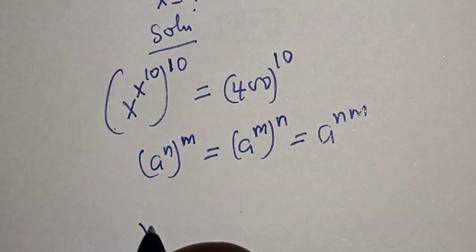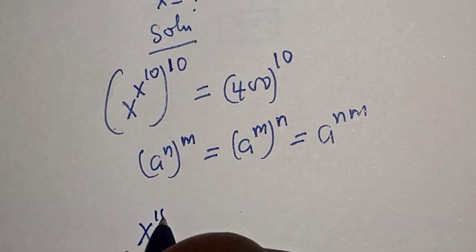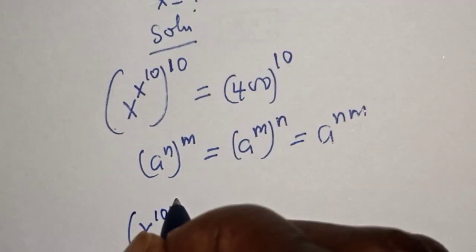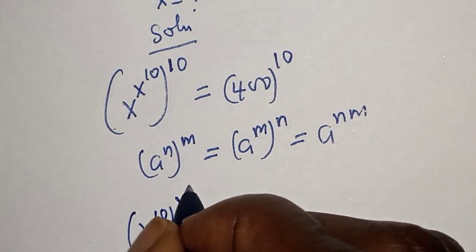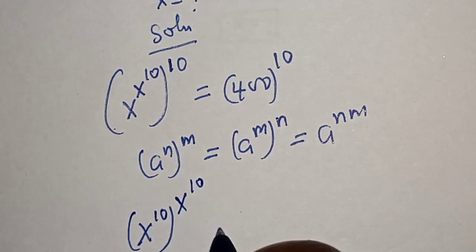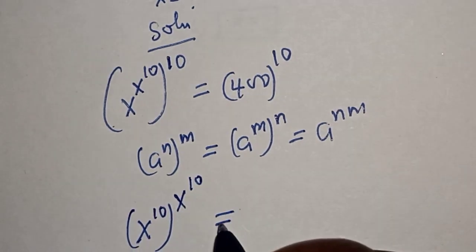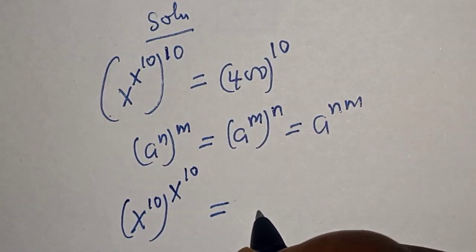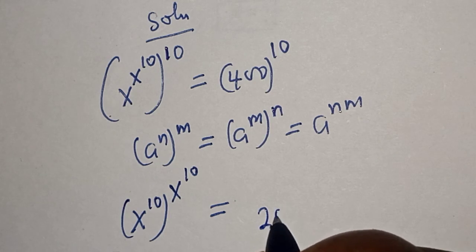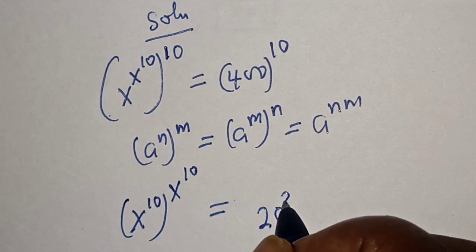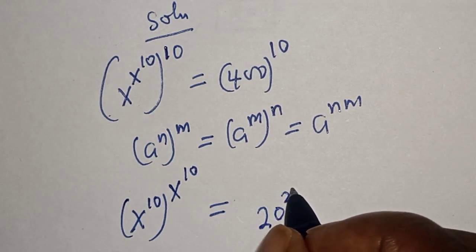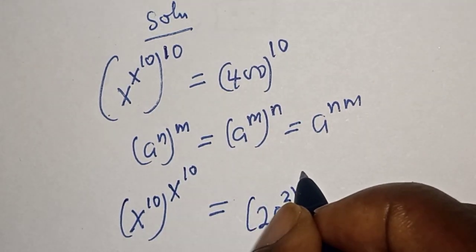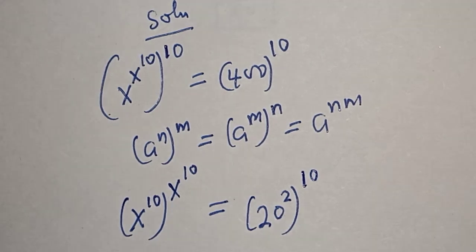So this becomes s raised to power 10, raised to power s raised to power 10, is equal to 400 raised to power 10, which can be written as 20 squared, raised to power 10.